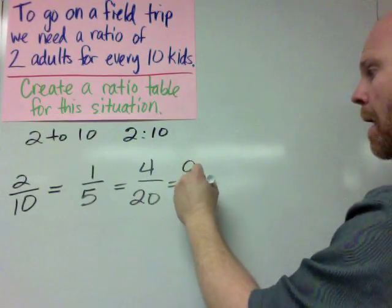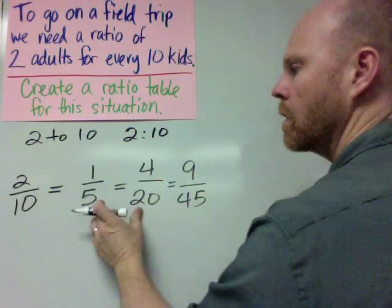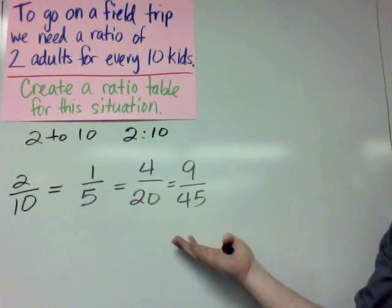And we could do another one. We could do 9, we could do 9 to 45. Okay, so all of these ratios are equivalent to each other.